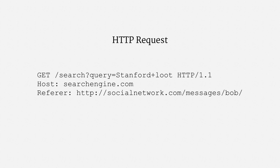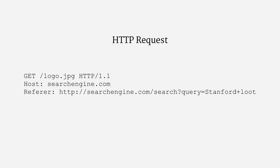When your browser loads a web page, it usually includes a referrer header. The referrer header has two functions. First, if you click or tap from one web page to another, the referrer tells the second web page where you're coming from. Here, Alice was linked to the search engine query from a social network message that Bob sent. The second way in which the referrer header works relates to content embedded on a web page. Every image, video, and so on requires its own HTTP request. When your browser issues requests for those embedded resources, the referrer header is set to the web page's URL. In this example, Alice's browser is loading the search engine's logo, and in the process, it's sending a referrer header, which is the URL of the search web page.